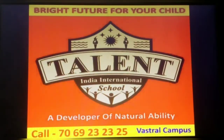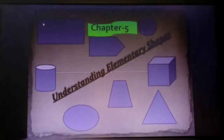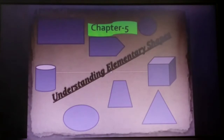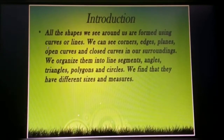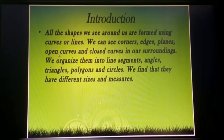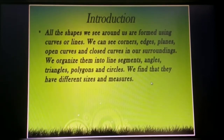Hello students. Today we learn Class 6, Chapter Number 5: Understanding Elementary Shapes. First we learn the introduction. All the shapes we see around us are formed using curves or lines. We can see corners, edges, planes, open curves, and closed curves in our surroundings. We recognize them as line segments, angles, triangles, polygons, and circles. We find that they have different sizes and measures.